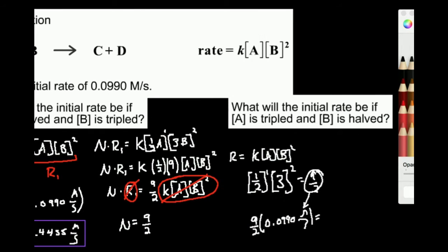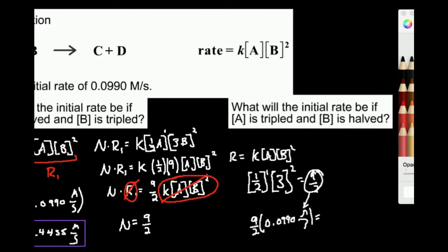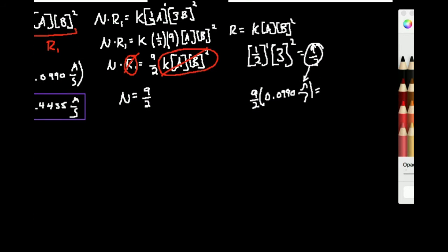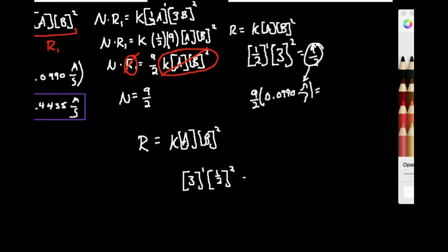Now let's look at the other case: what if I triple A and halve B? My rate law is equal to k times the concentration of A times the concentration of B squared. I'm going to do this the quick way. I'm tripling A, so I plug a 3 in for A to the first power, and I'm halving B, so I plug 1/2 in for B, remembering to square it.